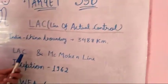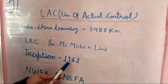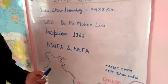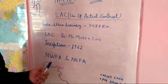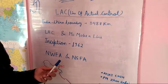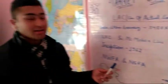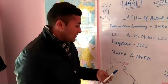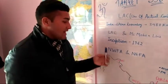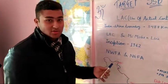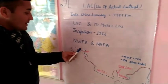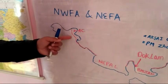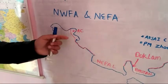The inception of the term Line of Actual Control was originated back in the year 1962 by Chinese Premier Zhou Enlai, in which he used this term in his letter written to Pandit Jawaharlal Nehru. In a narrow sense, the Line of Actual Control is a boundary that basically separates the Jammu and Kashmir region between China and India.